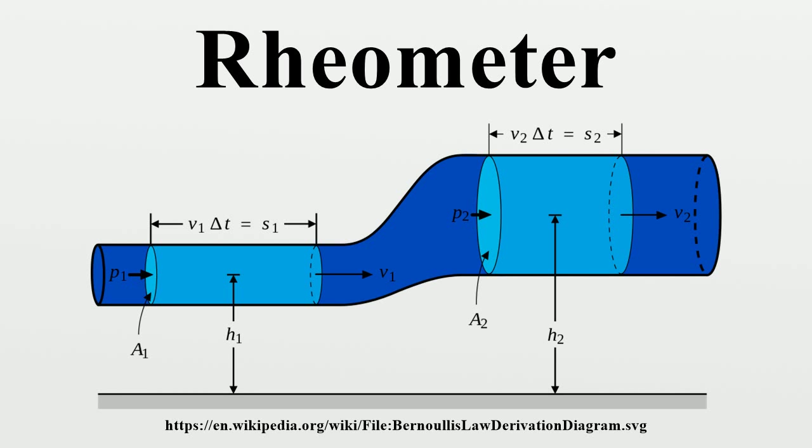Typically the plate is rotated and the force on the cone measured. A well-known version of this instrument is the Weissenberg rheogoniometer, in which the movement of the cone is resisted by a thin piece of metal which twists, known as a torsion bar.